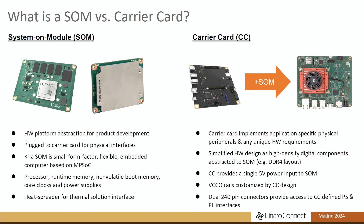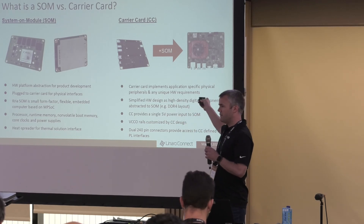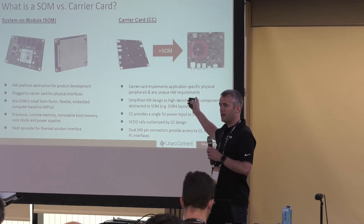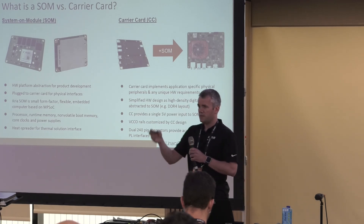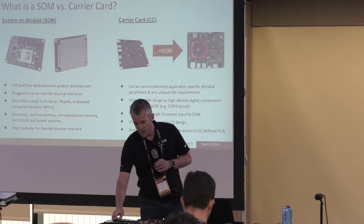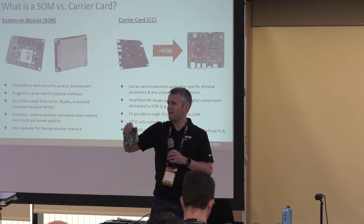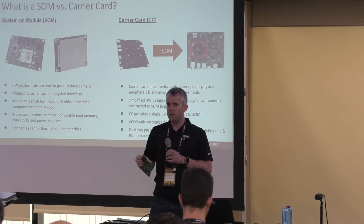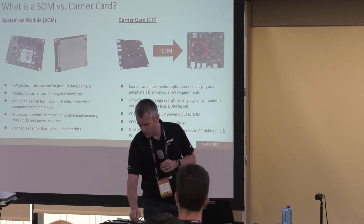An example of that application space would be industrial IO. On a factory floor or power plant, you'll have a common compute need but a huge diversity in the type of IO you need to interface to. The way customers achieve that is through a SOM and then a carrier card where you bring in all the application-specific IO, whether that be CAN, a set of UARTs, a different number of Ethernet ports, and so on.